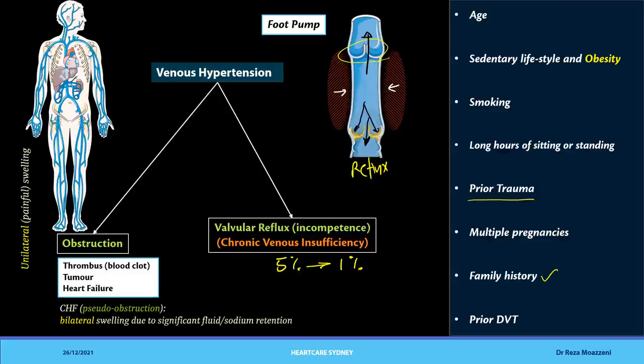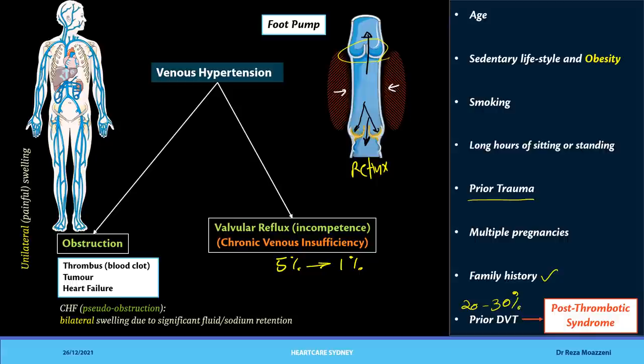History of prior DVT is also important. We have a condition called post-thrombotic syndrome — out of people who develop DVT, about 20 to 30 percent can go on to develop post-thrombotic syndrome many years later. This is due to damage done to the valves inside the veins at the time of the DVT. So it is extremely important to ask about prior DVT.